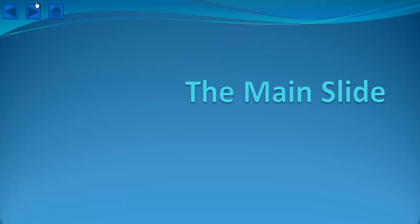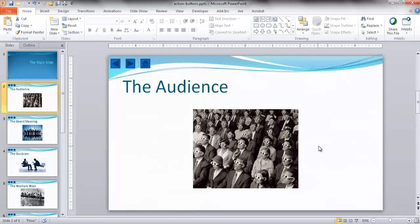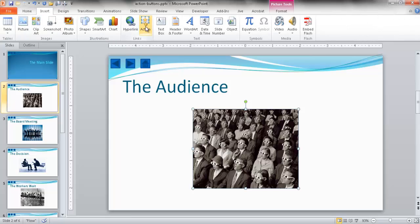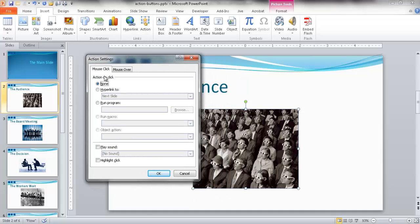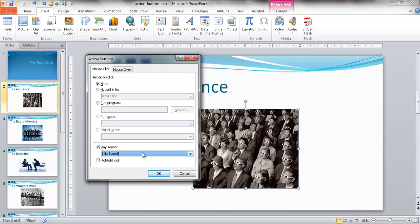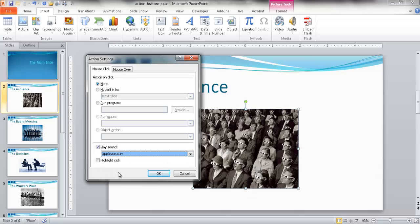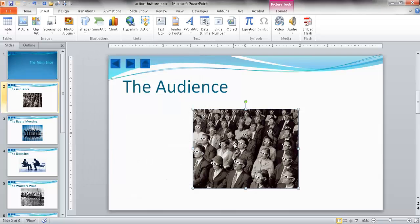You don't necessarily need to use those predefined shape action buttons. You can also apply actions to existing objects — mostly pictures or other objects already on your slides. For example, on this particular slide I want to add a sound when I hover over this picture. Select the object, go to Insert, and under the Links group there is an Action command. Click on it and you'll see the familiar Action Settings window. I'll set it to play the applause sound on click and click OK.